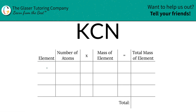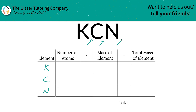So the first thing I'm going to do is write the elements I see. So we've got potassium, we've got carbon, we've got nitrogen. Next is to take into account the number of atoms, and that's where the subscripts come into play. So if you don't see any numbers down there, it is assumed to be a 1. So we've got 1 potassium, 1 carbon, 1 nitrogen.